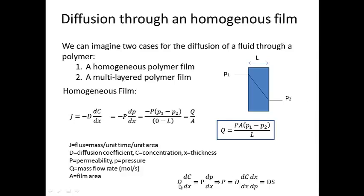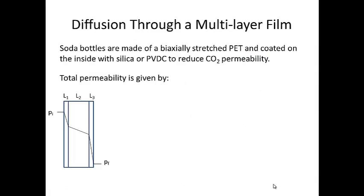Keep in mind that the diffusion flux, D·(dc/dx), is equal to the permeability times the pressure gradient. It can be rewritten as the permeability being equal to D times the concentration gradient times the inverse of the pressure gradient. And remember that C over P is equal to the sorption S. That means the permeability of the polymer is equal to the diffusion coefficient of the polymer times the sorption S.